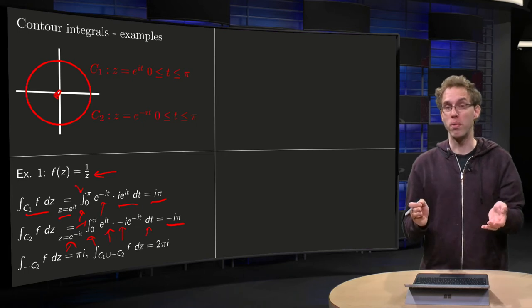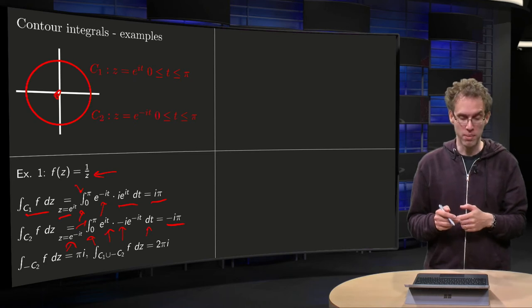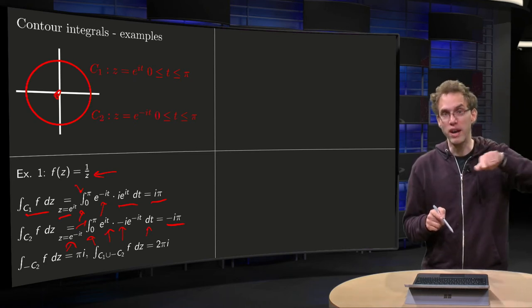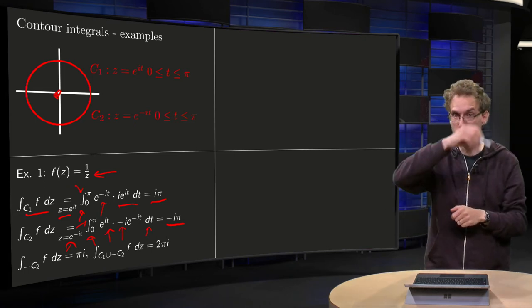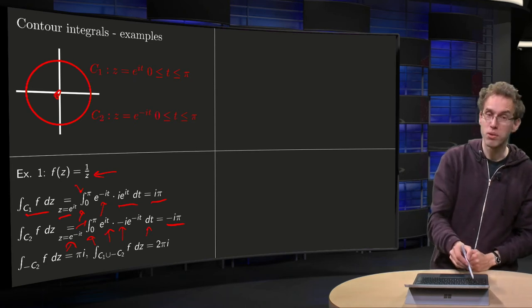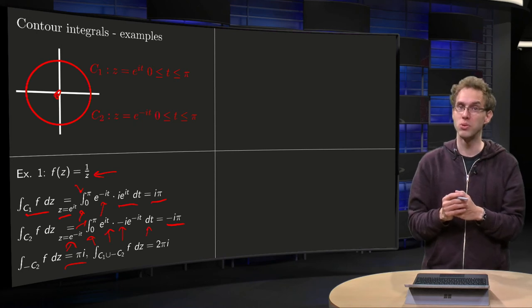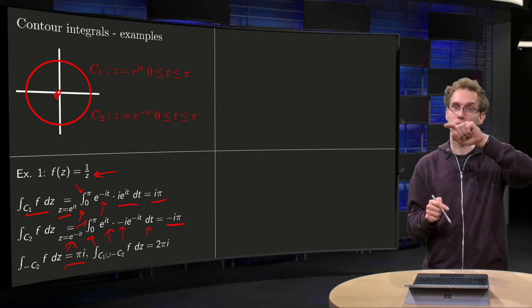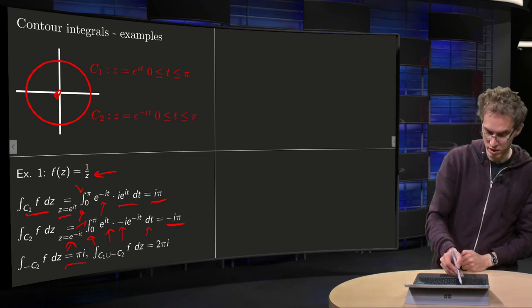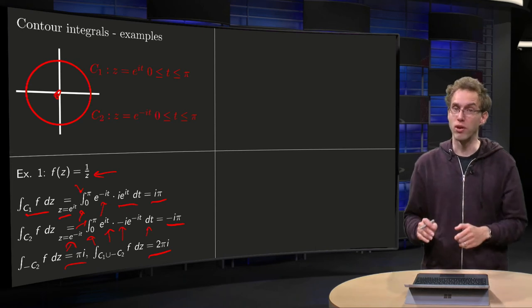Such an integral may depend on the path. You know this from your vector calculus already. What happens if you go via c1 first and then back via minus c2, so you go via closed curve? Then you get the integral along minus c2 equals pi i, because it equals minus the integral along c2. Going along the closed path, you get pi i plus pi i equals 2 pi i. So in this case, the integral along a closed curve does not equal 0.